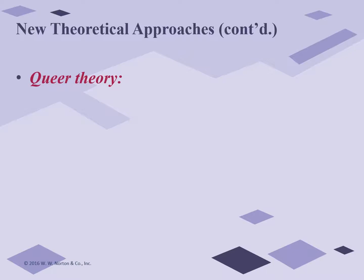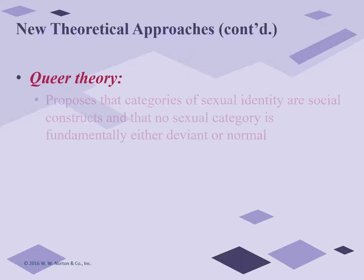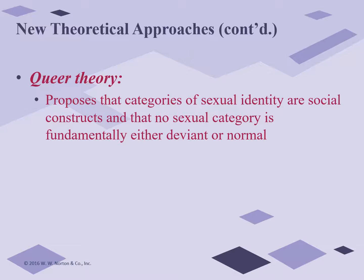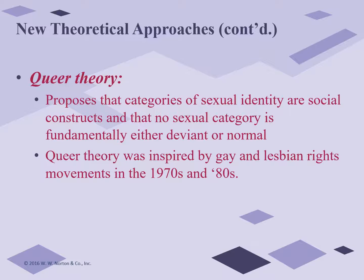Queer theory, which arose in the late 1980s and early 1990s, proposes that the categories of sexuality — such as homo, hetero, bi, and trans — are social constructs. No sexual category is fundamentally deviant or normal; we create these meanings socially, which means we can change those meanings as well. Queer theory was inspired by the gay and lesbian rights movements of the 1970s and 1980s.